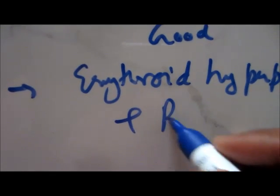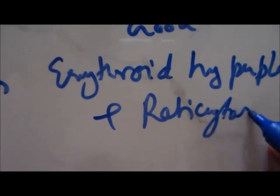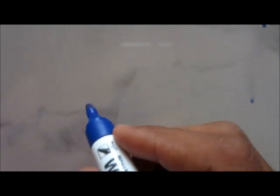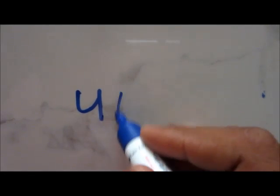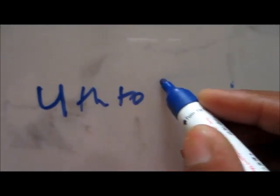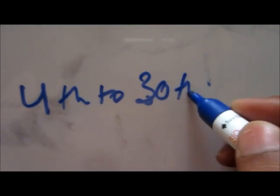Reticulocytosis takes place, and then next, after this, just from the fourth day to the 30th day, hemoglobin level increases in the body.